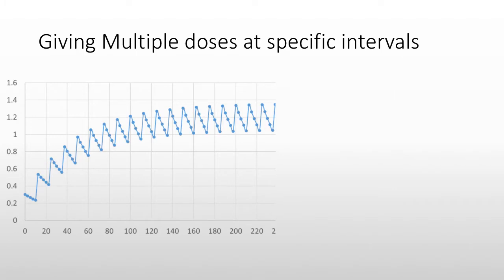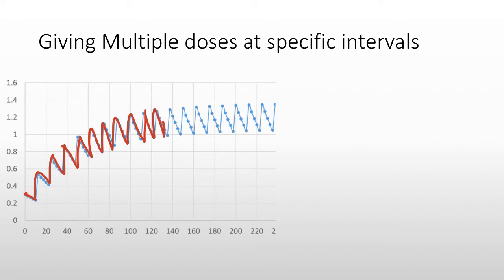On the other hand, if we give multiple doses — a dose at time zero and it starts to fall, another dose and it starts to fall, and so on — eventually the concentration keeps climbing, but after a little bit of time, we get to this steady state average. This averages out at a new steady state concentration.